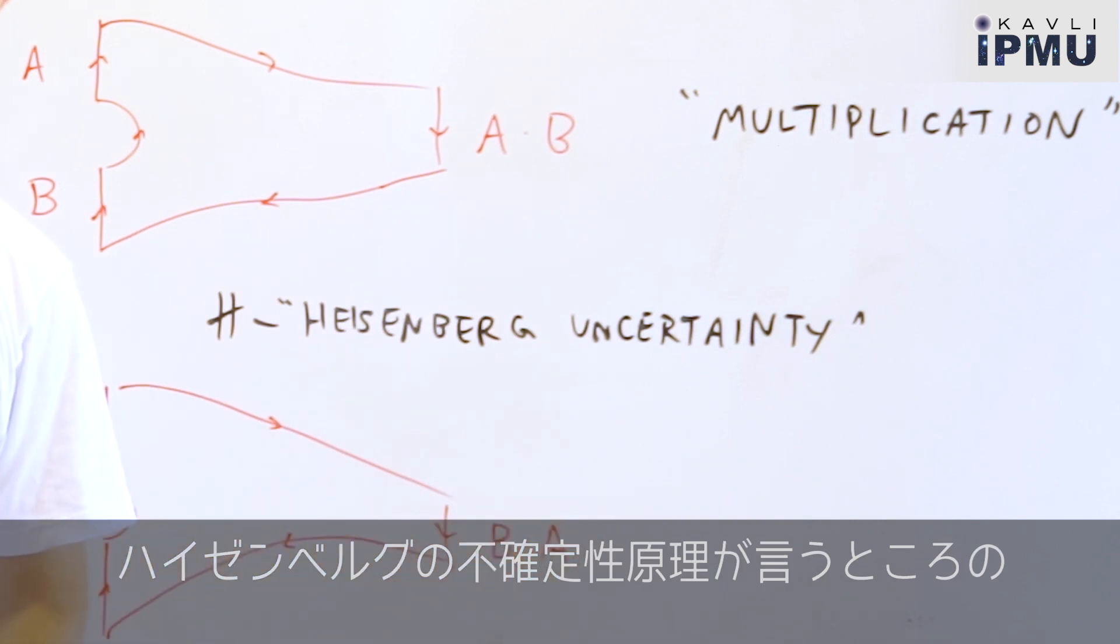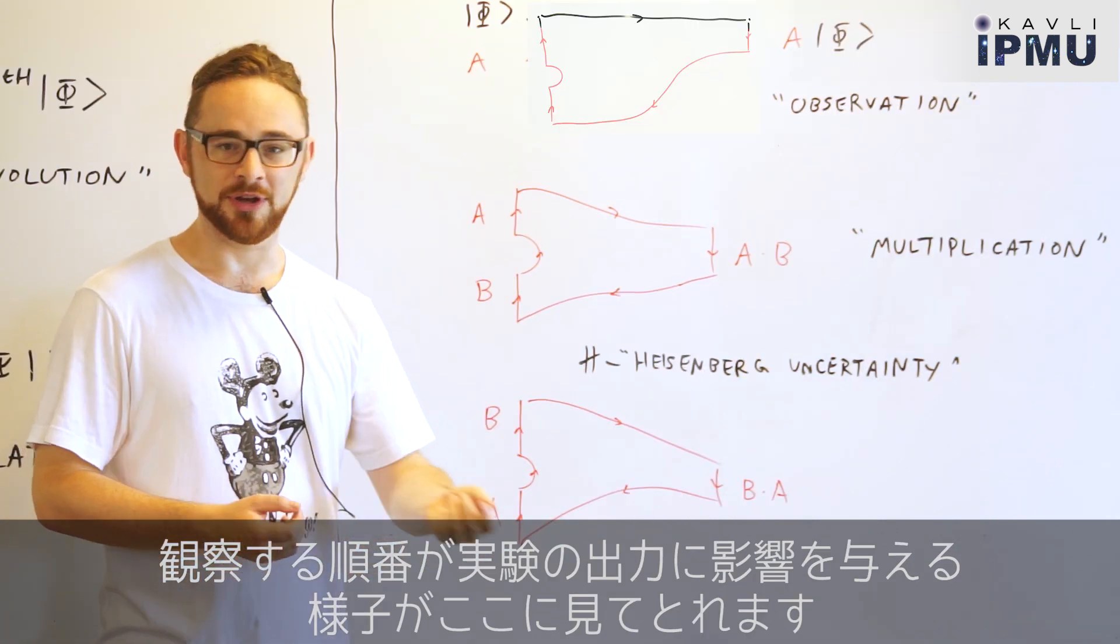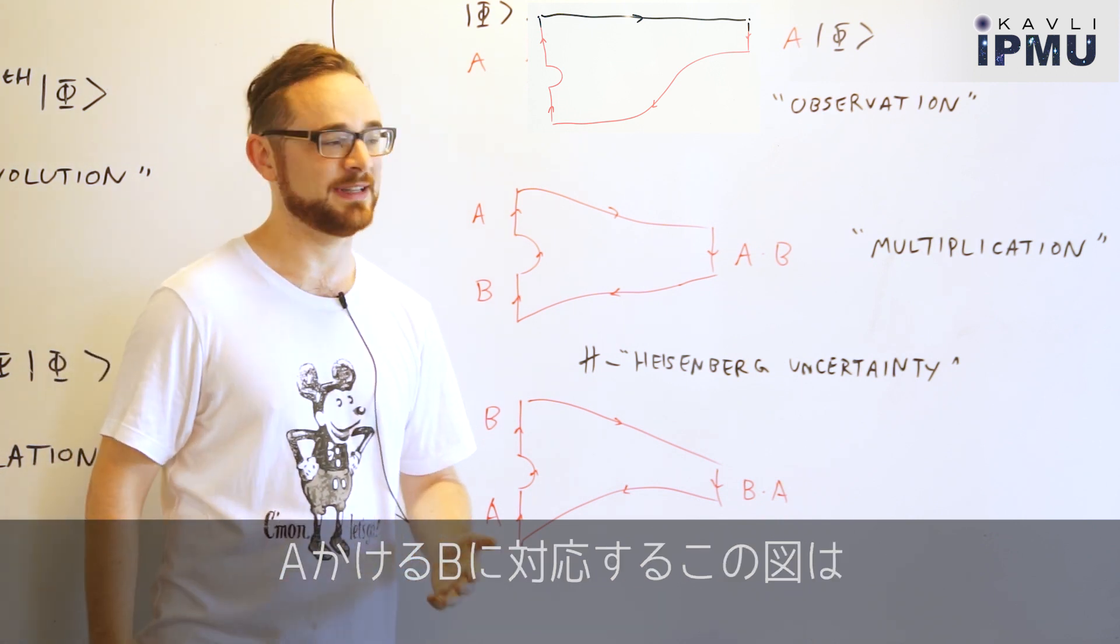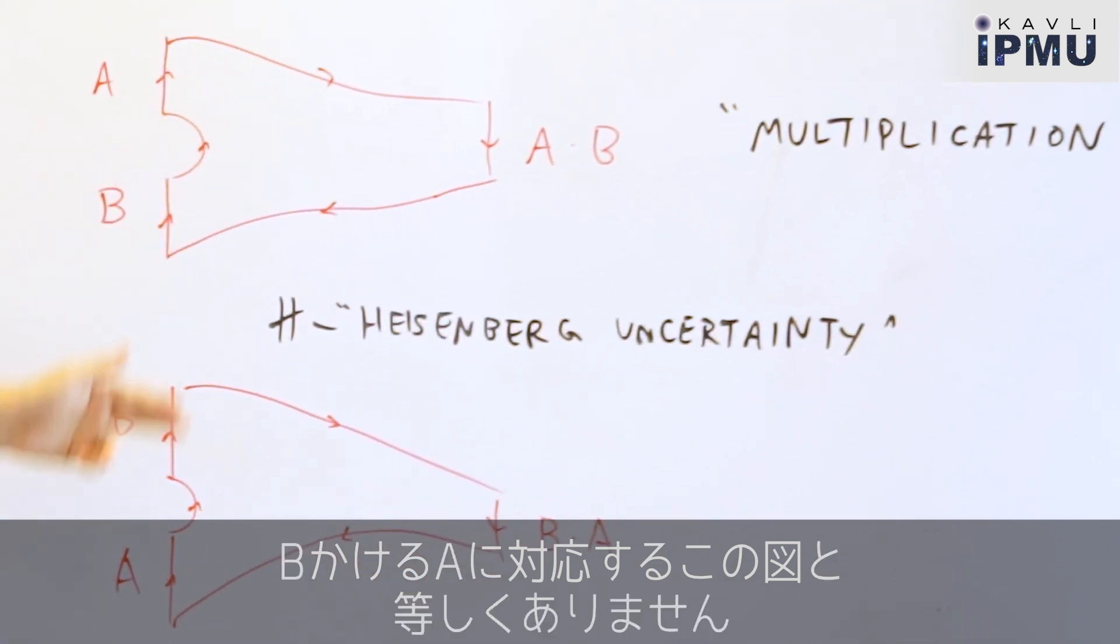The Heisenberg uncertainty principle, which says that the order in which you do observations can affect the outcome of an experiment, is reflected in the fact that this picture corresponding to A times B does not equal this picture corresponding to B times A.